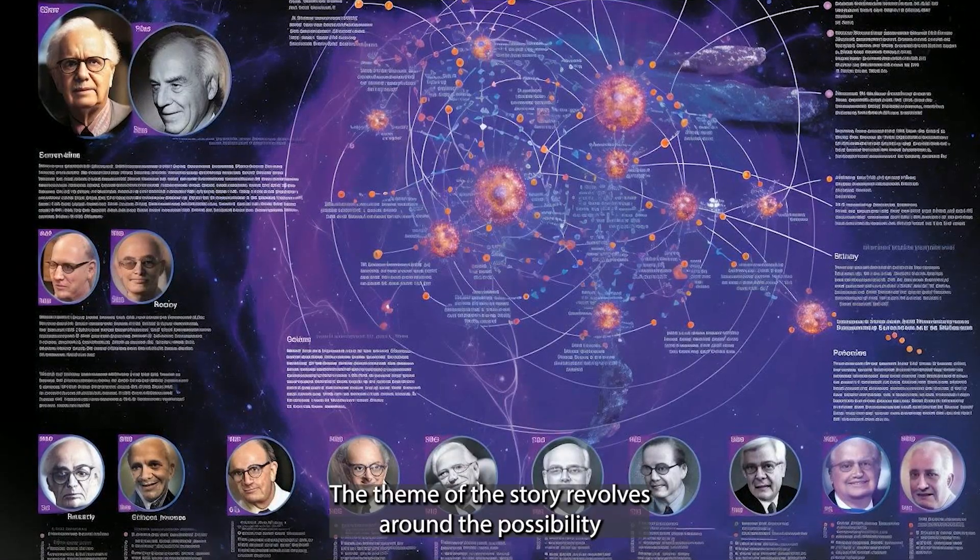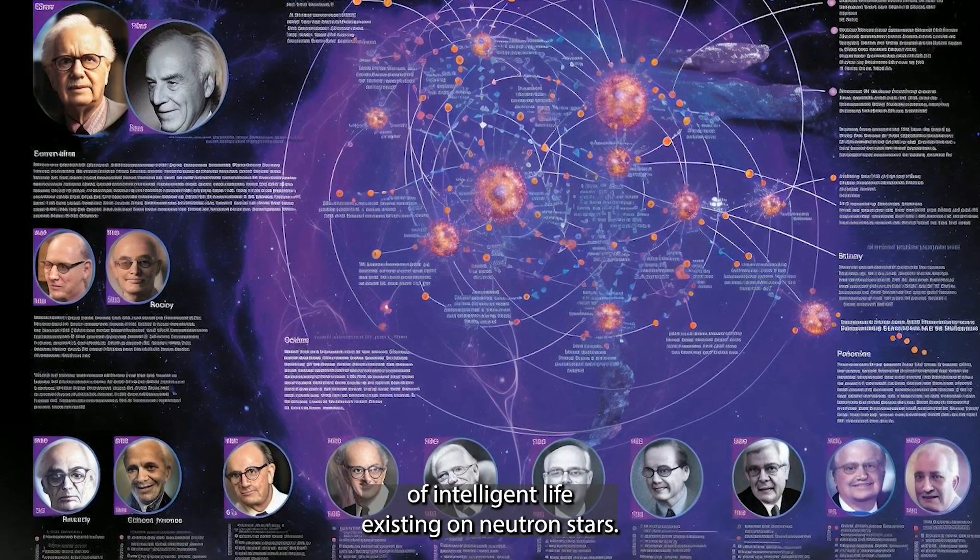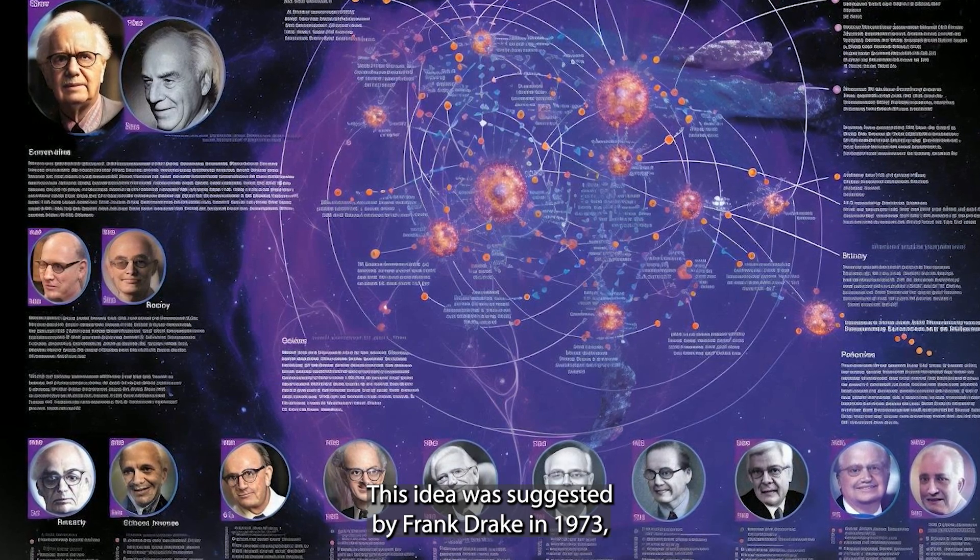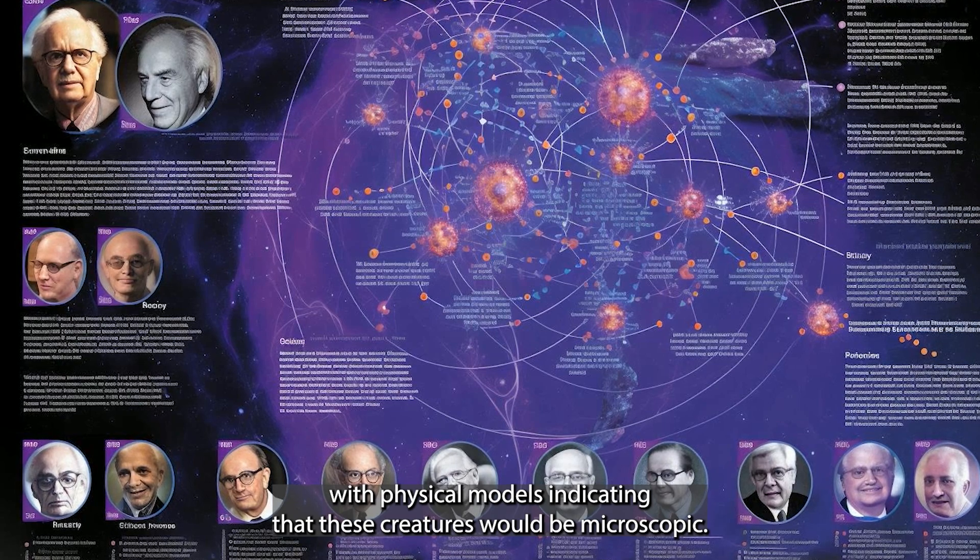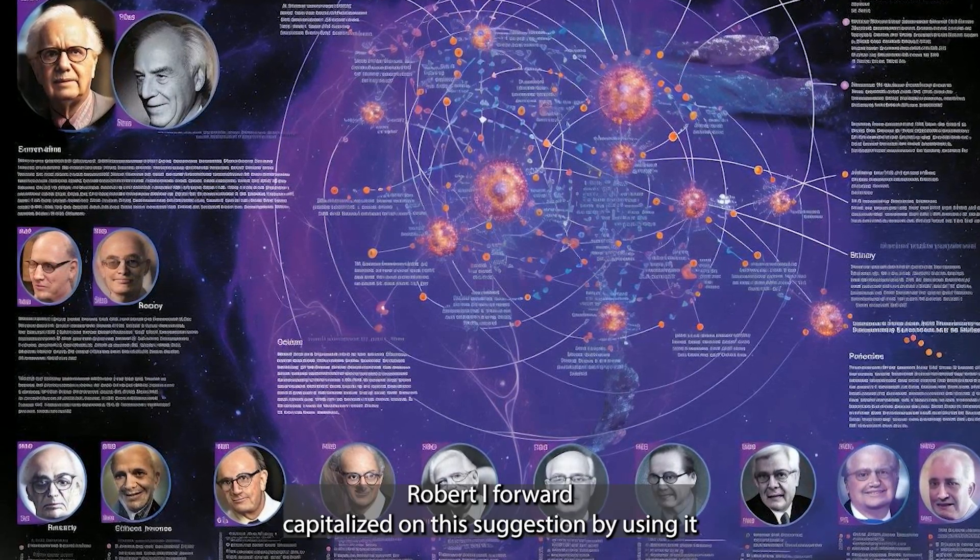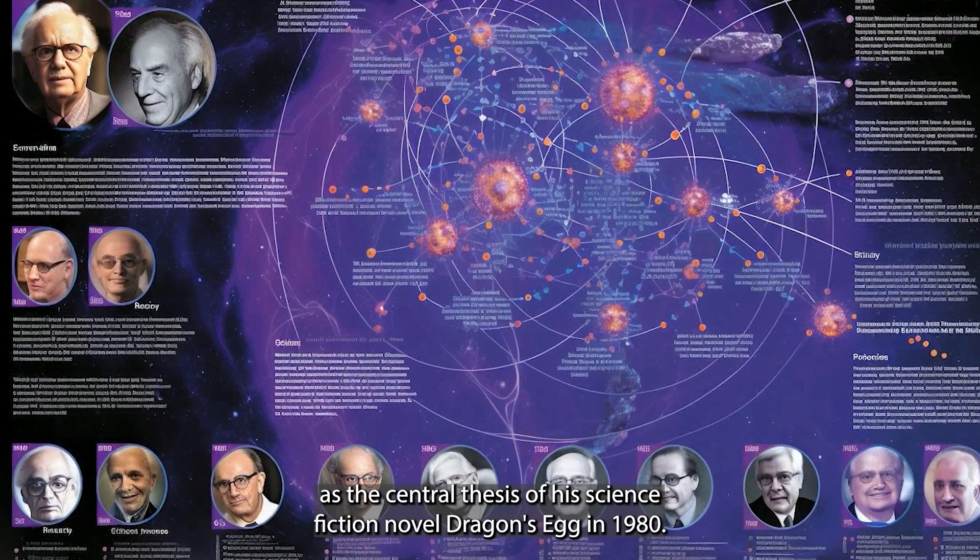The theme of the story revolves around the possibility of intelligent life existing on neutron stars. This idea was suggested by Frank Drake in 1973, with physical models indicating that these creatures would be microscopic. Robert L. Forward capitalized on this suggestion by using it as the central thesis of his science fiction novel Dragon's Egg in 1980.